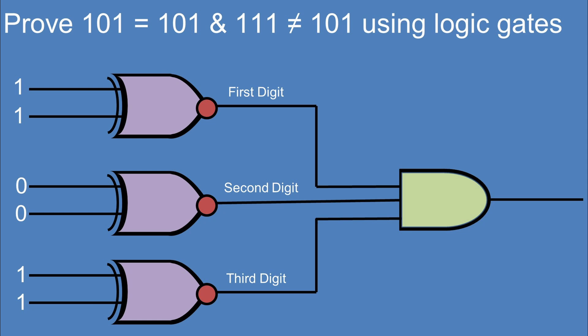So the way we'll be doing this one is by taking three not-exclusive ORs and feeding the outputs into an AND gate.